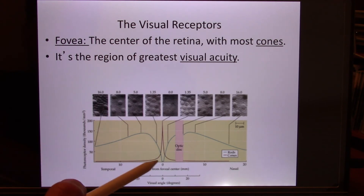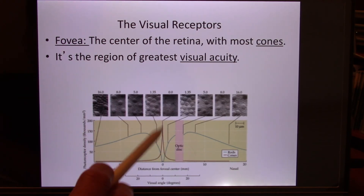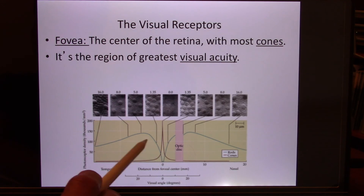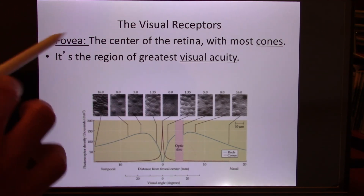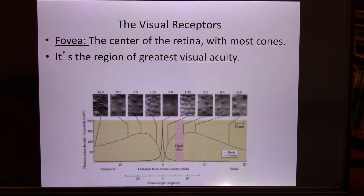Looking at the distribution of rods and cones from the fovea outward: in the fovea it is all cones. As you move away from the fovea, the number of cones drops dramatically and you begin to accumulate rods. In the peripheral vision there are a lot of rods. Their job is not to see clearly but to detect objects; when you need to see clearly you move your fovea to that object. The fovea, with all its cones, has the highest visual acuity.